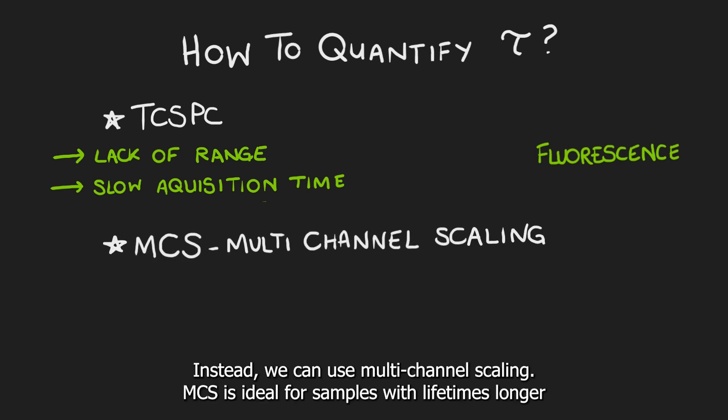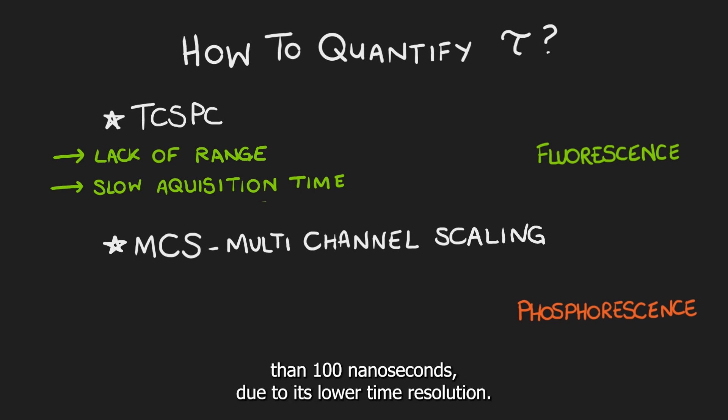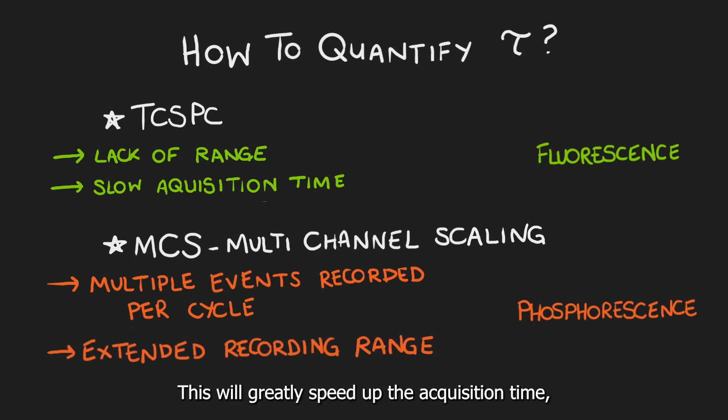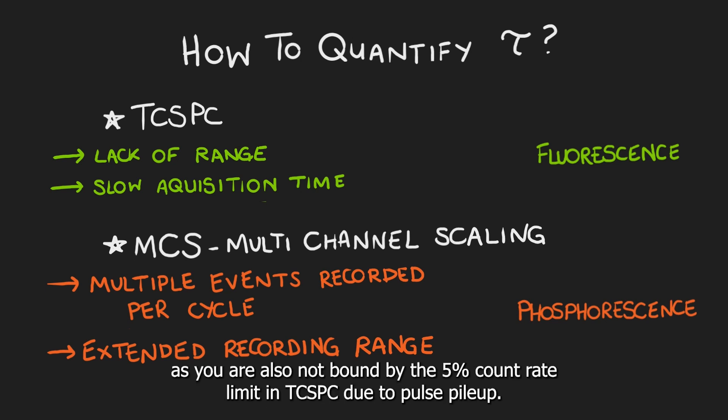Instead, we can use multi-channel scaling (MCS). MCS is ideal for samples with lifetimes longer than 100 nanoseconds due to its lower time resolution. In MCS, we will collect multiple photons per pulse, unlike TCSPC. This will greatly speed up the acquisition time, as you are also not bound by the 5% count limit in TCSPC due to pulse pileup.